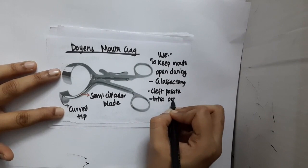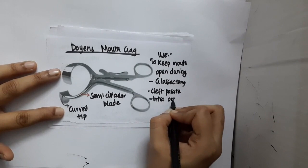In order to remove the intraoral ranula, you can keep the mouth open, and also for acquiring a biopsy, you can use this Doyen's mouth gag.